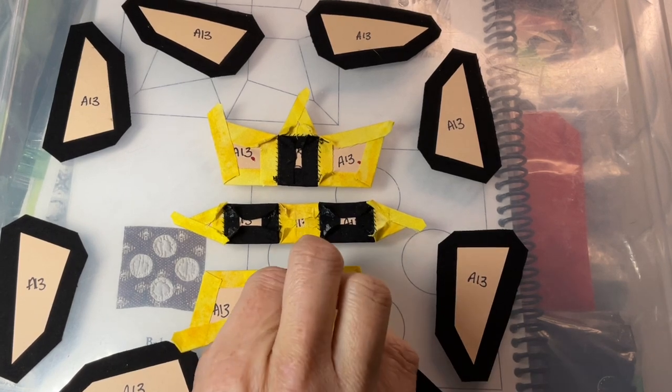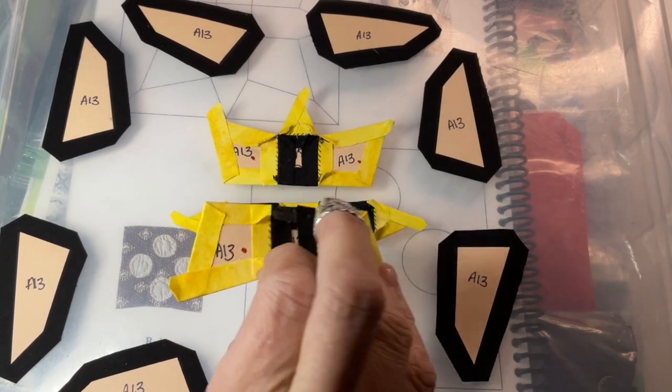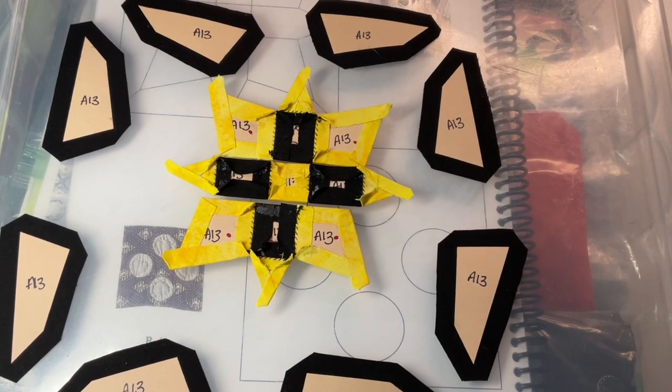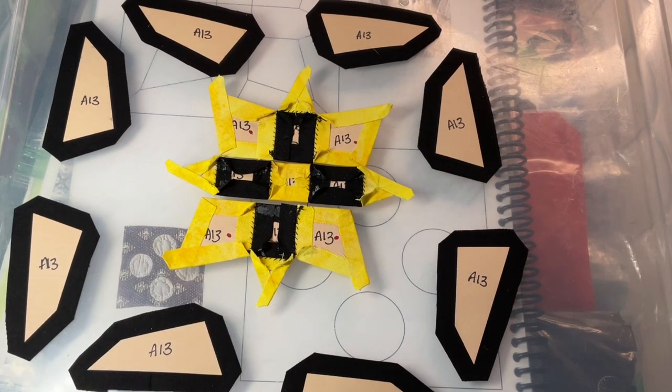So we've got these other two rows assembled here. So now I'm going to put all three of them together to form the center star before working on the outside sections.